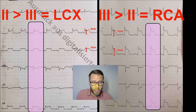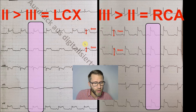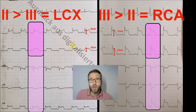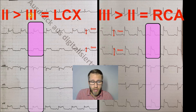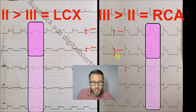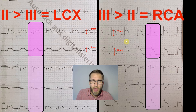So those are the two possibilities. Let's conclude this session: in an inferior myocardial infarction, always look at leads 2 and 3 to presume where the culprit lesion would be. If the ST elevation is greater in lead 2 than in lead 3, the culprit lesion is most probably in the LCX. If the ST elevation is bigger in lead 3 than in lead 2, the culprit lesion is most probably in the RCA.